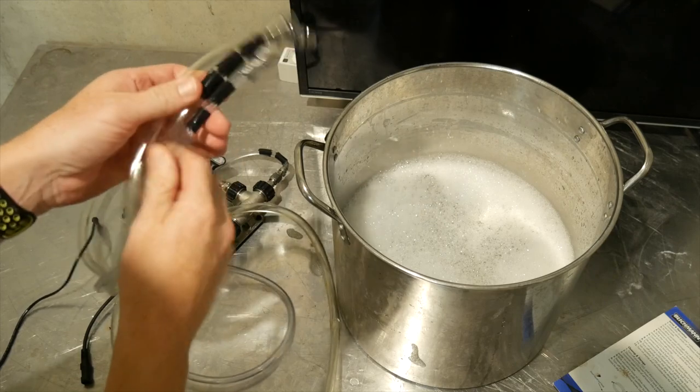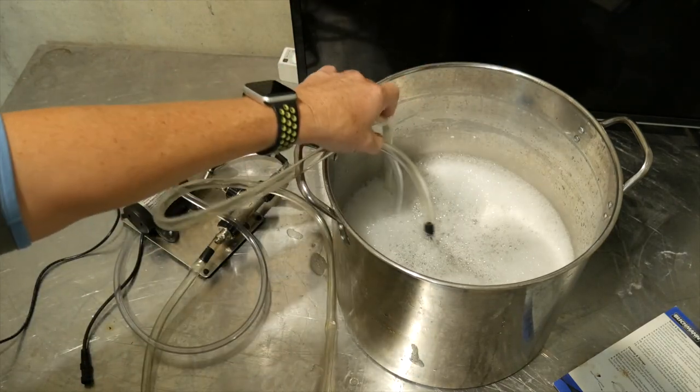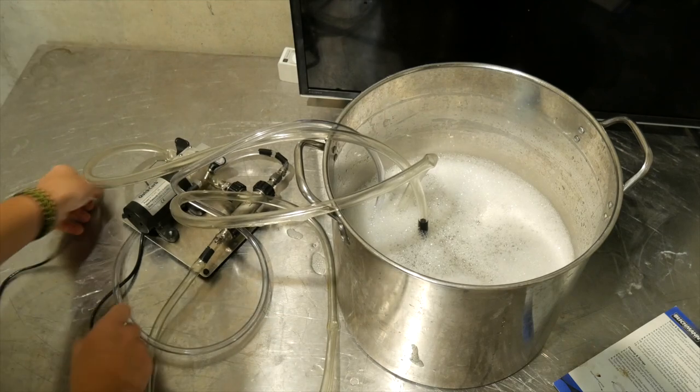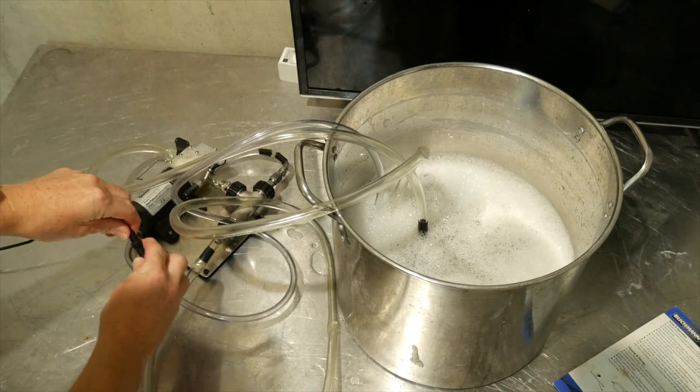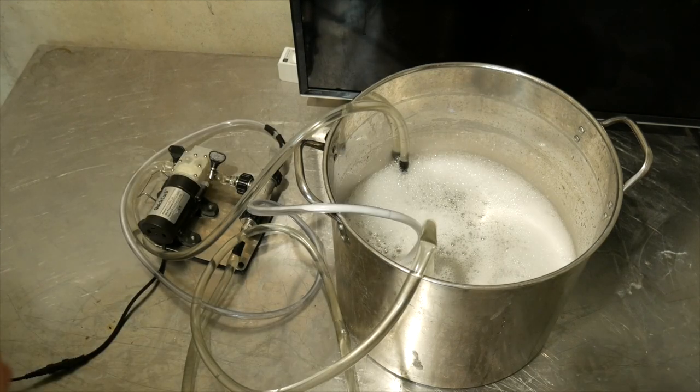To start with, you take all three hoses, put them into some sanitized water with star san in there, and then connect up the pump. So we're now running sanitized water through the system.